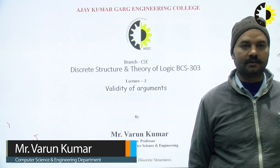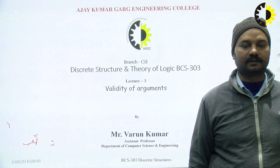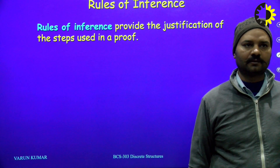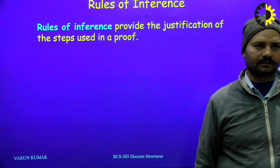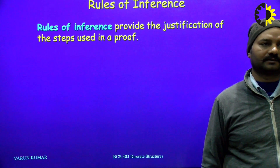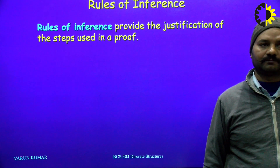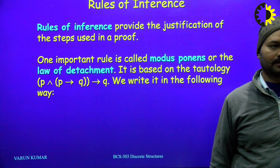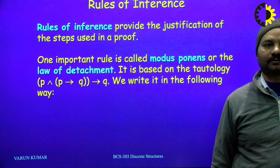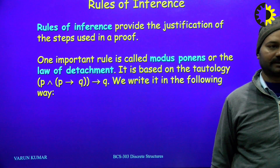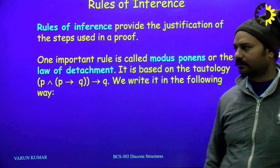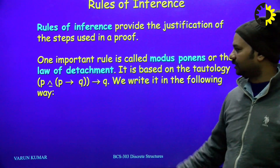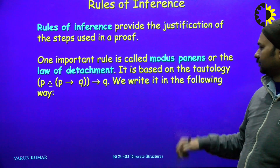A proposition is any declarative statement which we can prove — it has a true or false value. In this particular session we are going to discuss some standard rules of inference provided by the justification of steps using the method of proof. One important rule is called Modus Ponens, or the law of detachment. It is based on the tautology: p conjunction with p implication q, then the result is q.